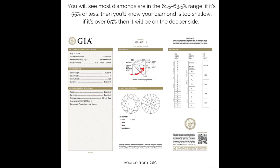You will see most diamonds are in the 61.5 to 63.5% range. If it's 55% or less, then you'll know your diamond is too shallow. If it's over 65%, then it will be on the deeper side.